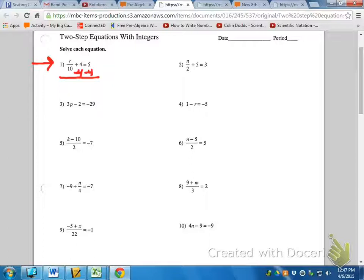Whatever you do on one side of the equal sign, you must do on the other side of the equal sign. So 4 minus 4 will cancel out, and you bring down below the line from left to right what is left. R over 10, and 5 minus 4 is 1.